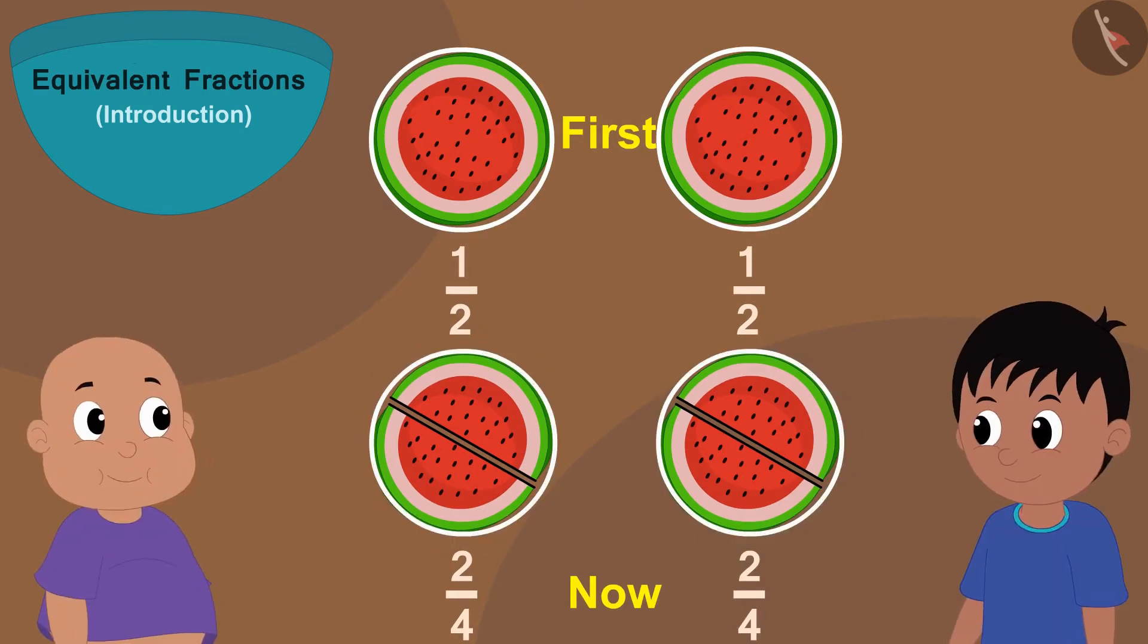Earlier, Raju and Bablu were getting one part out of two. That is, one by two parts. And now, they are getting two parts out of four. That is, two by four parts.